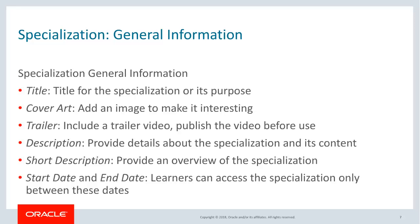Let's now look at how a learning specialist will go about creating a specialization. The specialist needs to go to the Manage Catalog area, the Specializations tab, and click Create Specialization. Then provide general information about the specialization. Use a title that conveys the purpose, since a specialization includes multiple courses with different titles. Include a cover art and trailer video to make it interesting and appealing to learners.